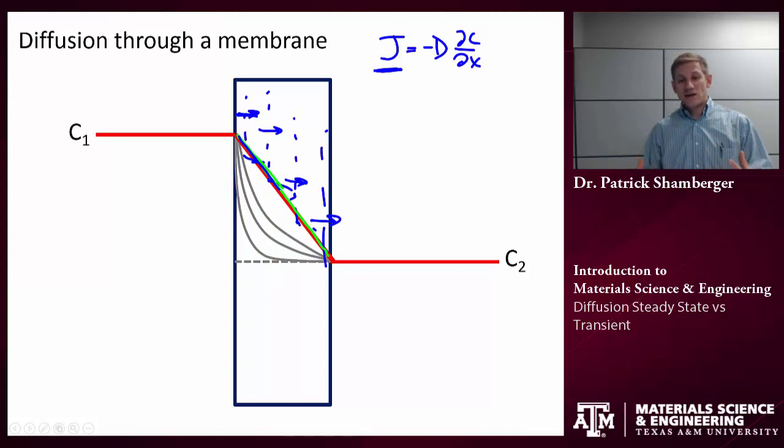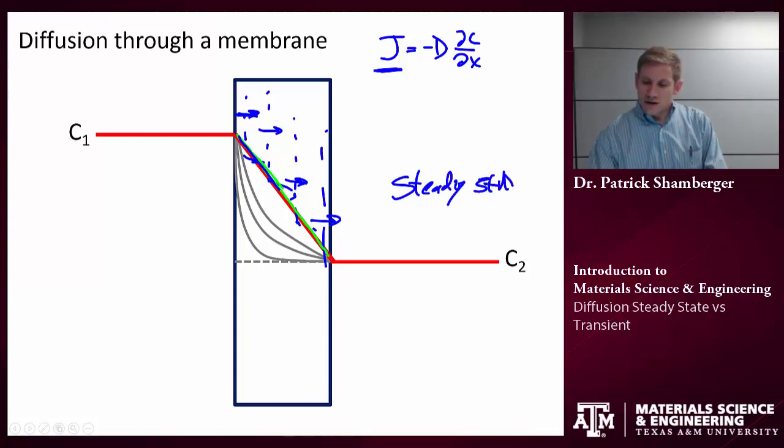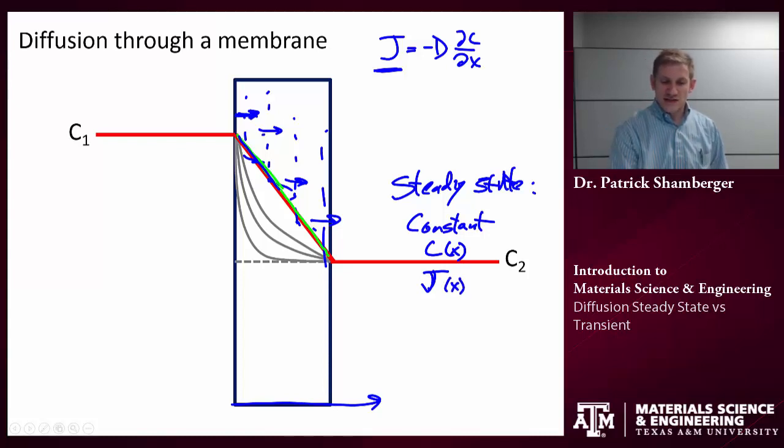So steady state is where I have a constant concentration profile. Here I'm calling that C as a function of x. And I have a constant mass flux as a function of x. The flux is the same at all of these, and it's constant in time as well. The concentration profile, C of x, is constant with time. That doesn't mean the concentration is the same at all the positions of x. The flux profile, J of x, is also constant with time. In this case, the flux is also going to be equal at each of those x positions.